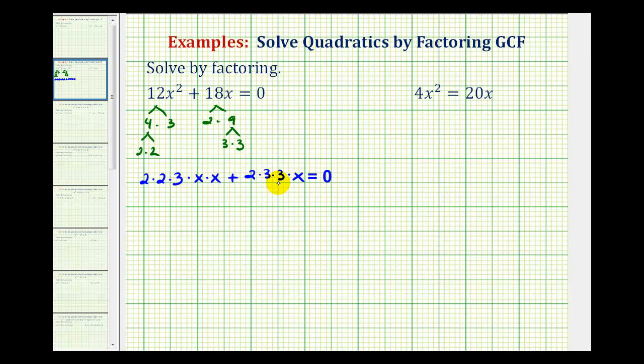Now again, we don't have to show this work, but if we aren't able to identify the greatest common factor by inspection, this is very helpful because now we can see all the common factors. These two terms have a common factor of 2, 3, and x. So 6x would be the greatest common factor, which is what we need to factor out.